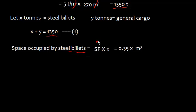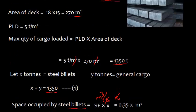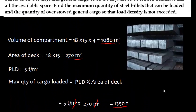The units confirm: storage factor in cubic meters per ton multiplied by quantity in tons gives cubic meters directly. Similarly, space occupied by general cargo is its storage factor × y = 4y cubic meters. The sum of both volumes must equal the total compartment capacity: 0.35x + 4y = 1,080 cubic meters — this is equation two.